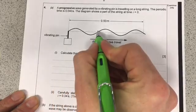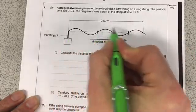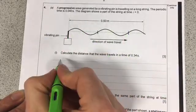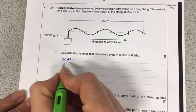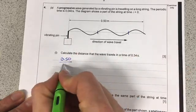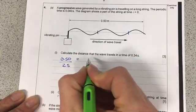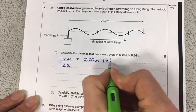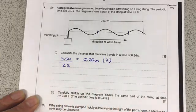So, if I have a look at this diagram here, I've got one, two and a half waves on it. So, the total distance, 0.50, divided by the number of waves, that's two and a half, is equal to 0.20 metres. Now, that's the wavelength, or lambda, the wavelength of this wave.